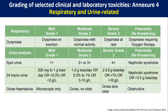For proteinuria: grade 3 is 200 mg to 1 gram loss per day or less than 0.3% or less than 3 g per meter. Grade 2 is 1 to 3 grams per day or 0.3 to 1% or 2 to 10 g per meter. For hematuria, grade 1 is microscopic only; grade 2 is gross without clots; grade 3 is gross with clots; and grade 4 is obstructed, requiring passive intervention.